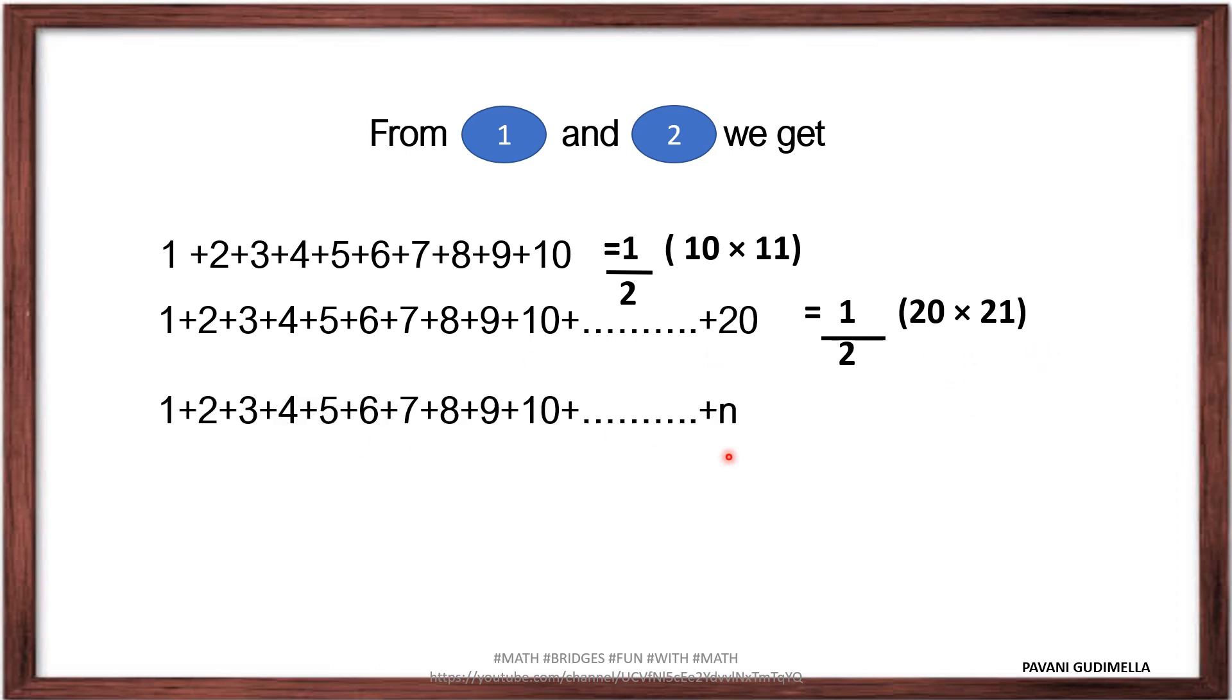Similarly, if there are n strips, so how can we write that one? It will be half of n into n plus 1. Here see, 10 means 10 plus 1, which is 11. 20 means 20 plus 1, 21. Similarly, if it is n, the next term it will be n plus 1. Hence, it's verified that sum of n numbers is n by 2 into n plus 1.